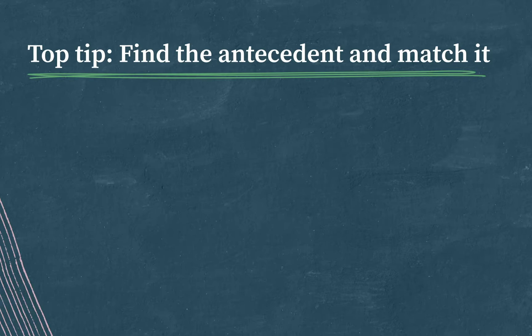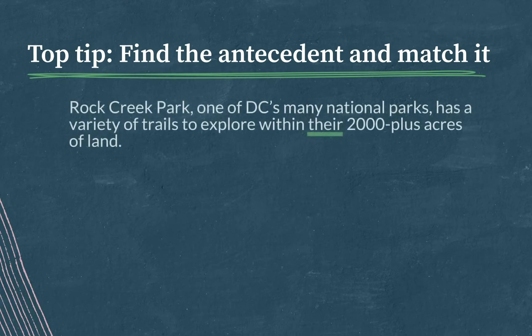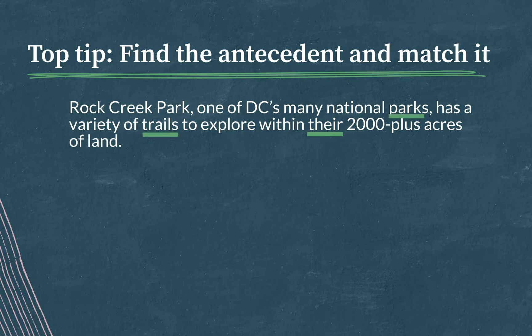Let's look at an example. 'Rock Creek Park, one of D.C.'s many national parks, has a variety of trails to explore within their 2,000 plus acres of land.' Even though it's close to the plural nouns trails and parks, this pronoun logically refers to Rock Creek Park, which is a singular noun, so 'their' should be changed to 'its': 'Rock Creek Park has a variety of trails to explore within its 2,000 plus acres of land.'